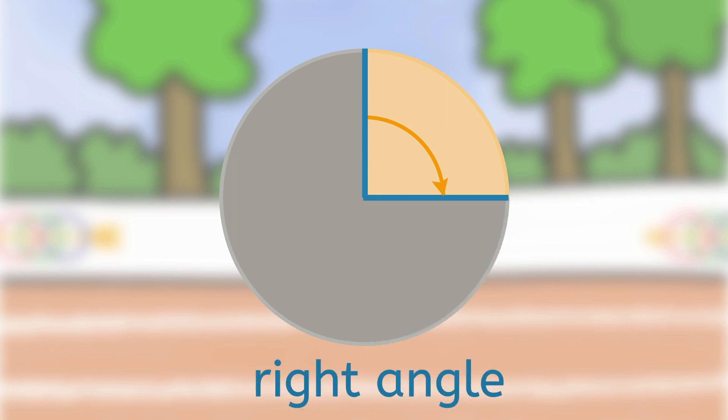A right angle is a quarter of a full turn. It is 90 degrees. It is drawn with a square.